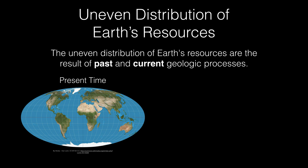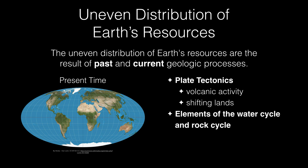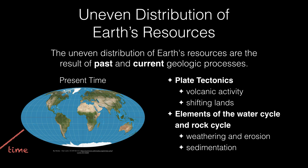Earth's resources are distributed around the world because of these geologic processes — processes like plate tectonics, which cause volcanic activity and shifting lands, elements of the water cycle and the rock cycle, such as weathering, erosion, and sedimentation. All of these processes together, over time, have distributed Earth's resources around the world.